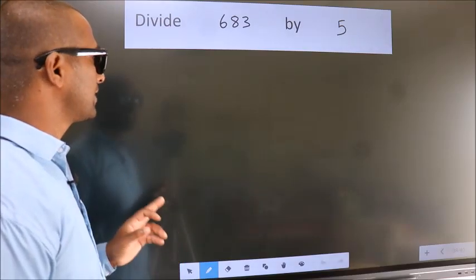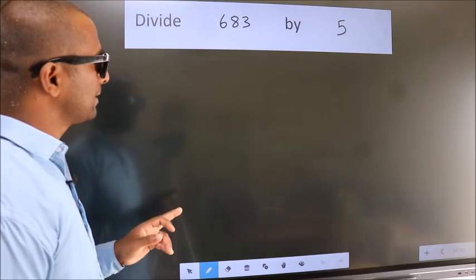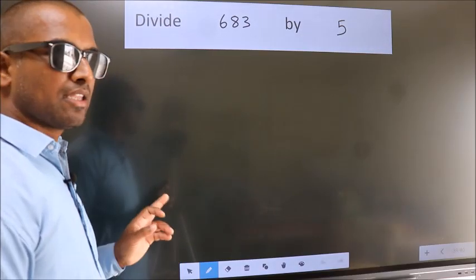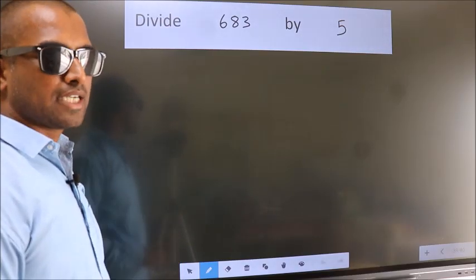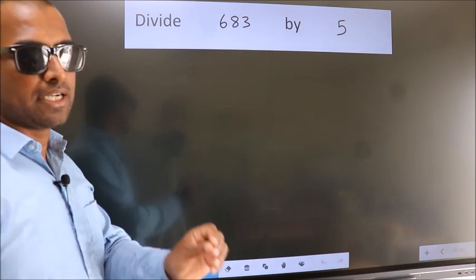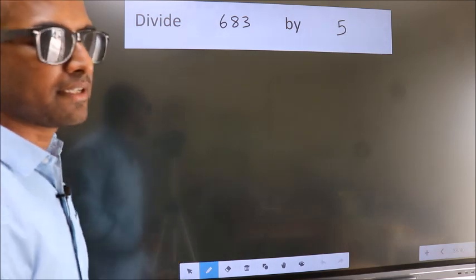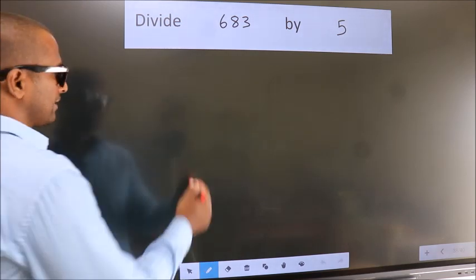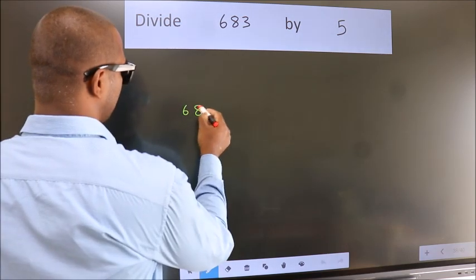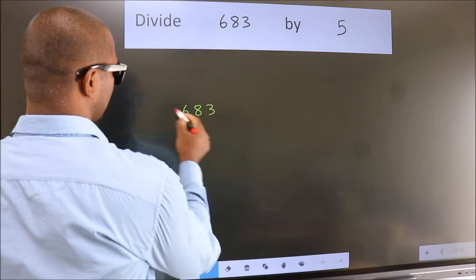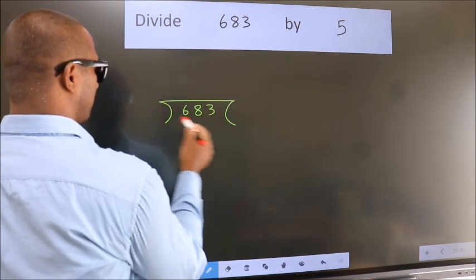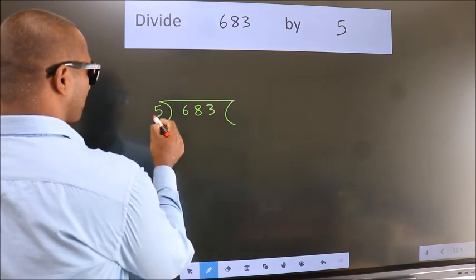Divide 683 by 5. To do this division, we should frame it in this way: 683 here, 5 here.